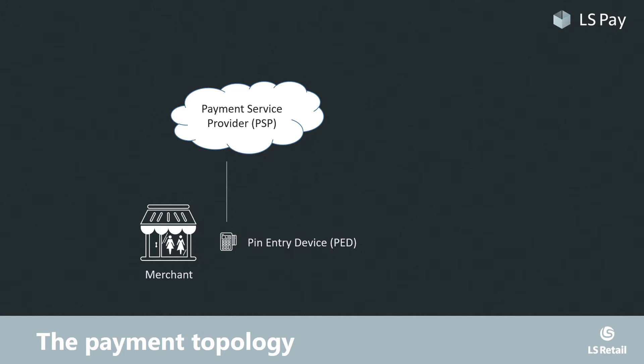Next in line, the PSP routes the authorization request to the respective acquirer, also known as a processor in the US and Canada.